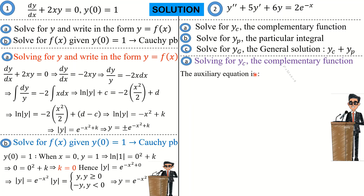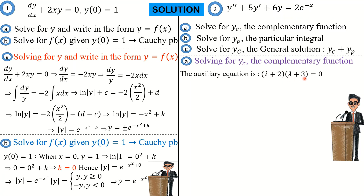For the complementary function, we begin by looking at the auxiliary equation. Letting the parameter be lambda and substituting, we get lambda squared plus 5 lambda plus 6 equals 0. Factoring this gives (lambda plus 2)(lambda plus 3) equals 0, so the values of lambda are negative 3 and negative 2.